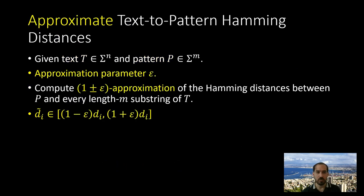In the approximation version of the problem, we are given an approximation parameter epsilon, and our goal is to compute for every substring of the text of length m, instead of the exact Hamming distance, just a (1 ± epsilon) approximation of the Hamming distance.